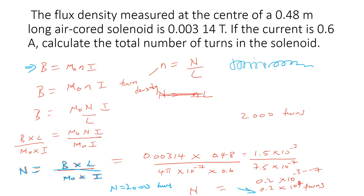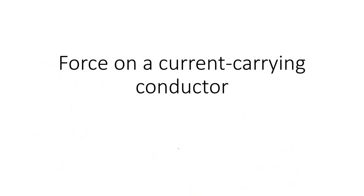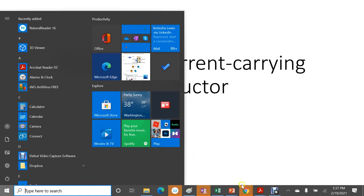Once you can remember that small n represents the number of turns per unit length, that should give you a clear indication of how to approach these problems. We'll leave it here for now, and in a subsequent lesson we'll come back to talk about force on a current-carrying conductor.